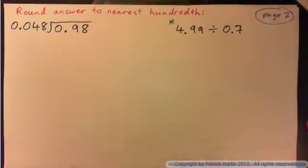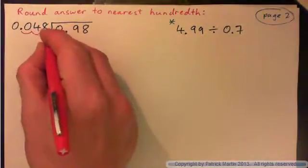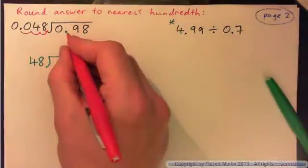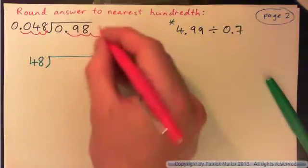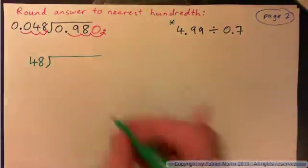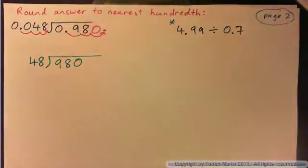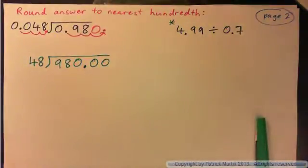Now what about these? Divide these and round the answer to the nearest hundredth. For this one, we have to move the decimal point over 1, 2, 3 places. So we have 48 into 980, and this decimal point must go over 1, 2, 3 places — over here. What do I put in the middle? A 0. So 48 into 980, and I'll put a couple of zeros on for the long division.